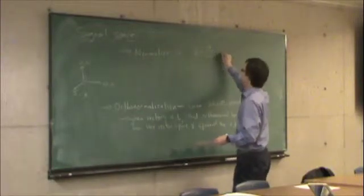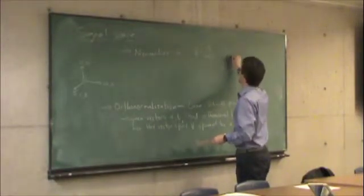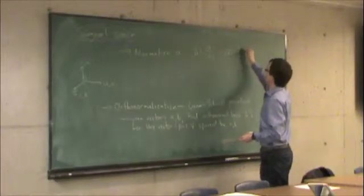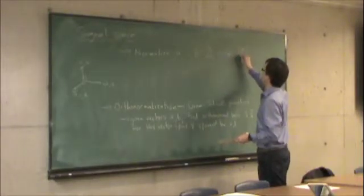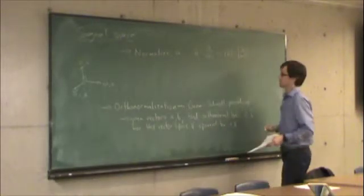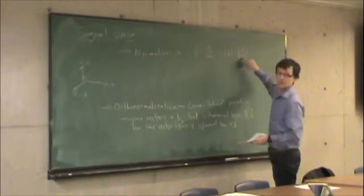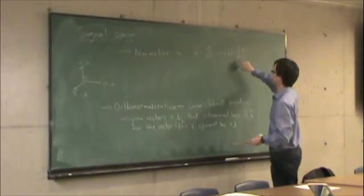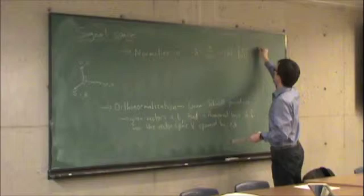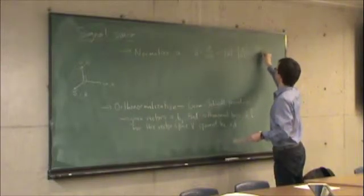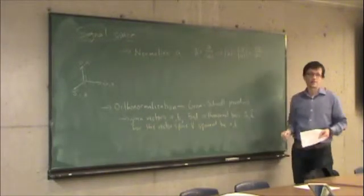So in other words, the norm of A hat is equal to the norm of the vector A divided by its norm. This 1 over norm of A comes out, and we get norm of A divided by norm of A is 1, so therefore we just shrink the length to 1.